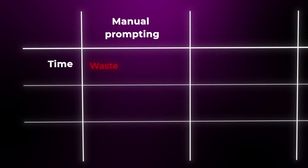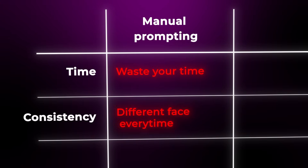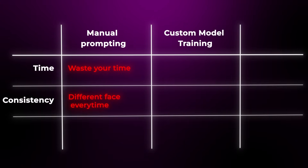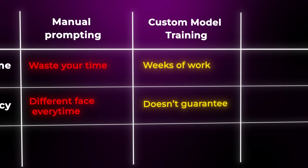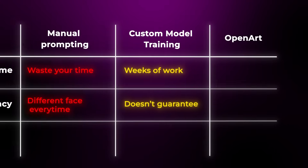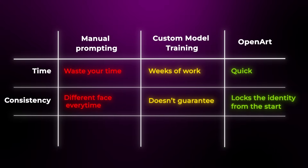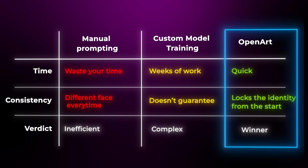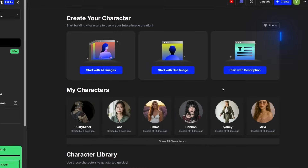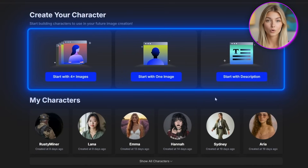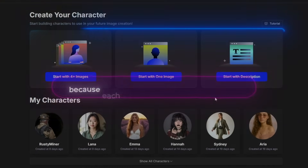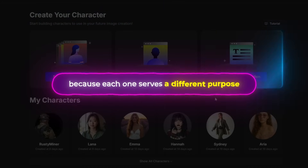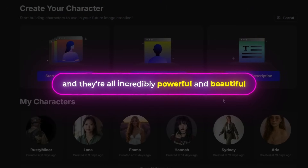So basically: manual prompting wastes your precious time and gives you different faces every time; custom model training takes weeks and still doesn't guarantee perfect results. But OpenArt locks your character's identity from day one with the same gorgeous features every single generation. Now let me show you the three methods OpenArt gives you for creating these consistent characters, because each one serves a different purpose and they're all incredibly powerful.